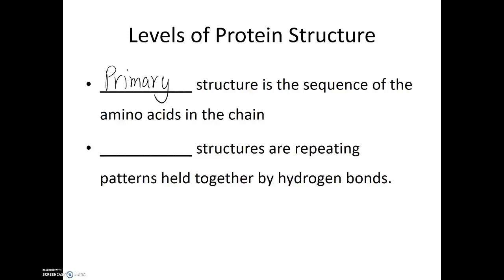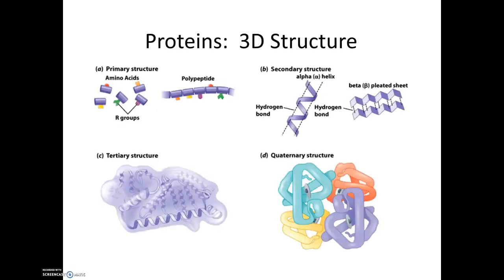Once the primary structure is established, certain regions of that polypeptide chain will start wrapping around themselves or moving sinusoidally in a back and forth pattern. This is known as secondary structure. Secondary structure is a series of repeating patterns held together by hydrogen bonds. So looking at this diagram, the order in which the amino acids are connected to each other is known as the primary structure. And these repeated structures that we see along that polypeptide, those are the secondary structures.